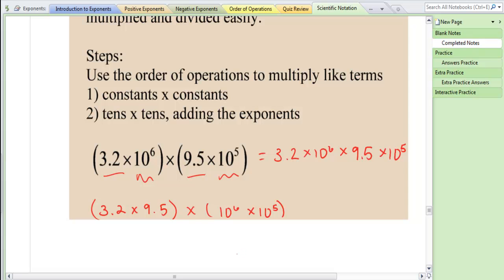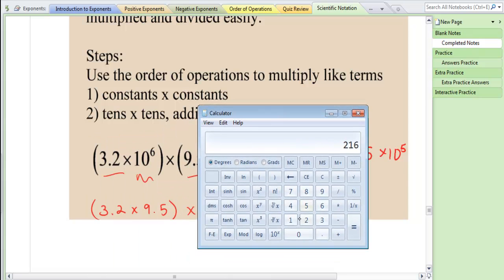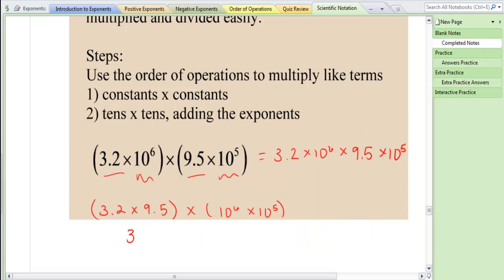I'm going to multiply 3.2 times 9.5 on my calculator, and that gives me 30.4. And then 10 to the sixth times 10 to the fifth, I keep my base of ten and add my exponents, six and five, to get 11.